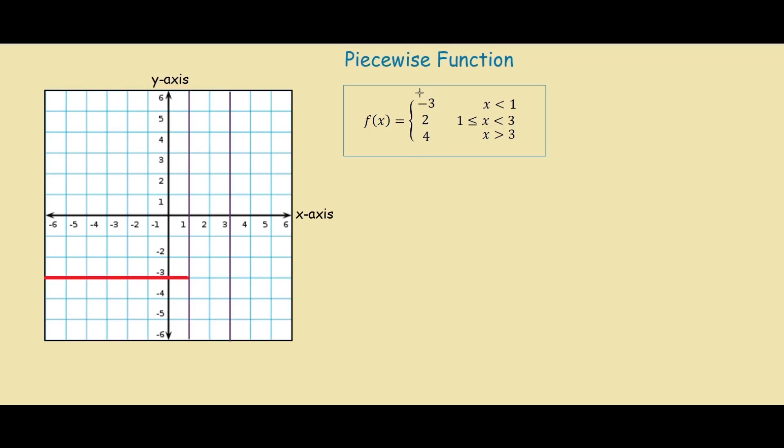Because the function y equals negative 3 is less than 1, we don't go past the line x equals 1. And because the inequality does not have an equal sign, it means that the function for y equals negative 3 is not defined at 1. So we represent this with an open circle.